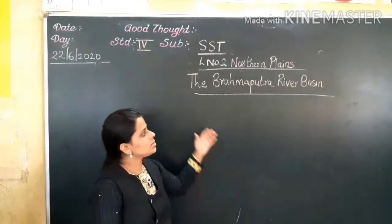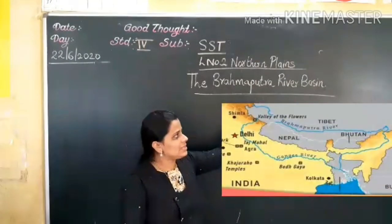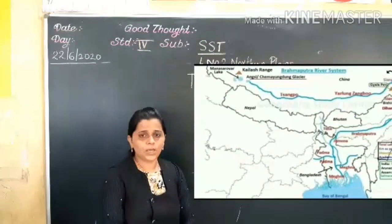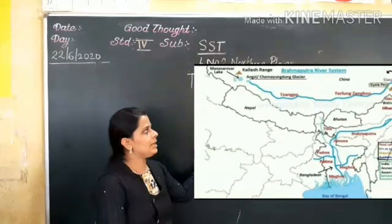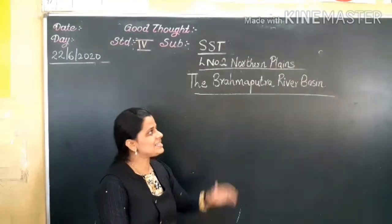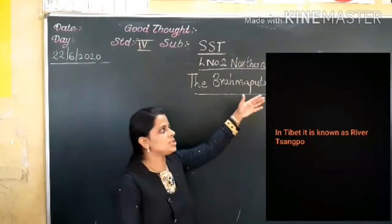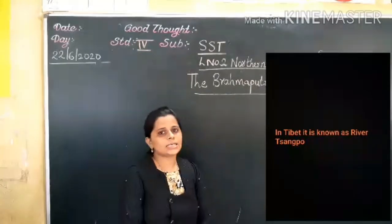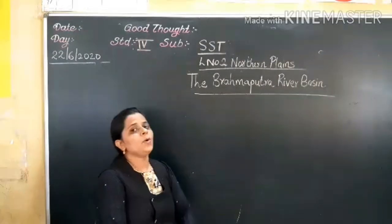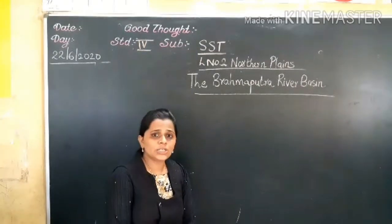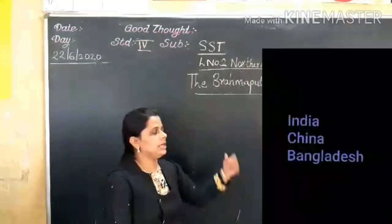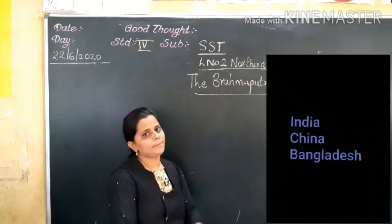As this river flows, in different places this river is known by different names. It starts in Tibet where it is known as river Siampandam. This river flows through three countries: India, China, and Bangladesh.